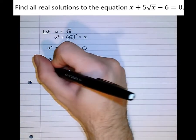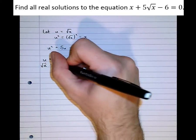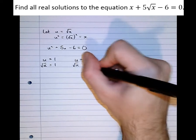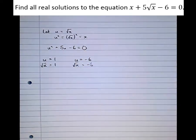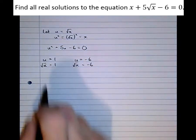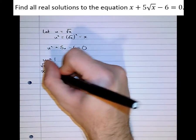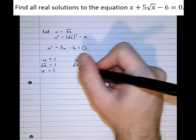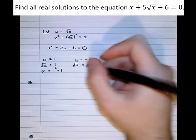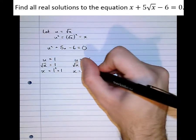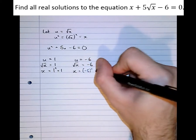Right, that means that root x equals 1, and root x equals minus 6. Now pay attention to this part because this is quite important. To get x from root x, we square it, to get x equals 1 squared, which is 1, and x equals minus 6 squared, which is 36.